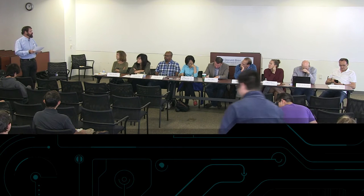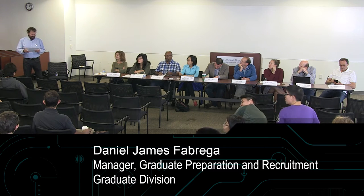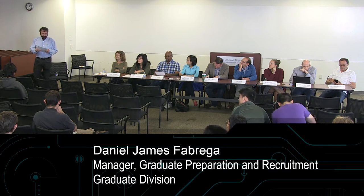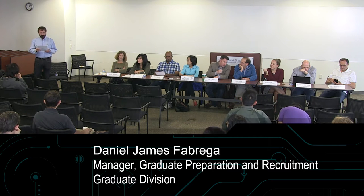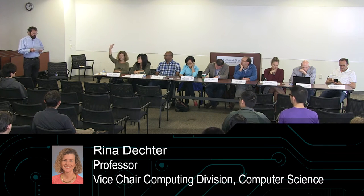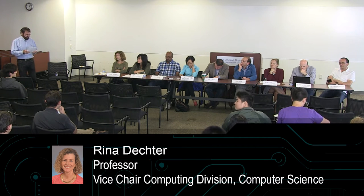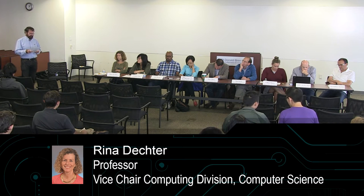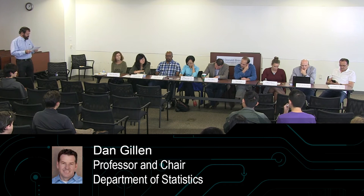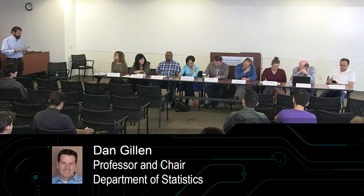I'm going to introduce the faculty in alphabetical order, so as I call your name, please wave your hand at the audience. First we have Daniel Pabrega, a special guest, who's the manager of graduate preparation and recruitment of the UCI graduate division. Yunnan Chin is professor and vice chair for undergraduate affairs in informatics with research interests in human computer interaction and medical informatics. Rena Dechter is professor and vice chair of the computing division, computer science, with research interests in artificial intelligence and machine learning. Dan Gillen is professor and chair of statistics, with research interests in statistics and statistical theory.